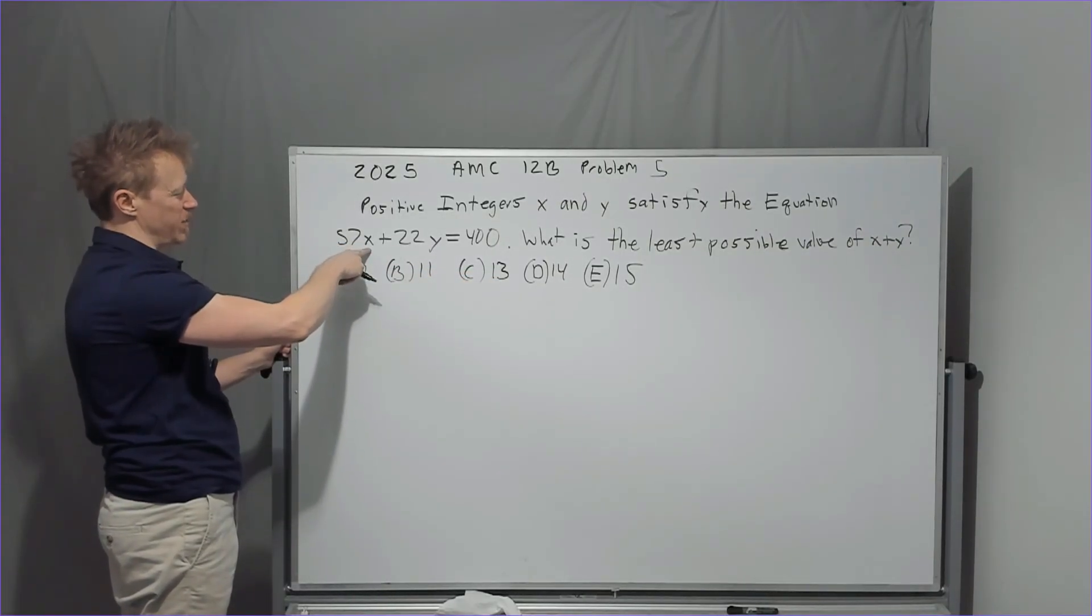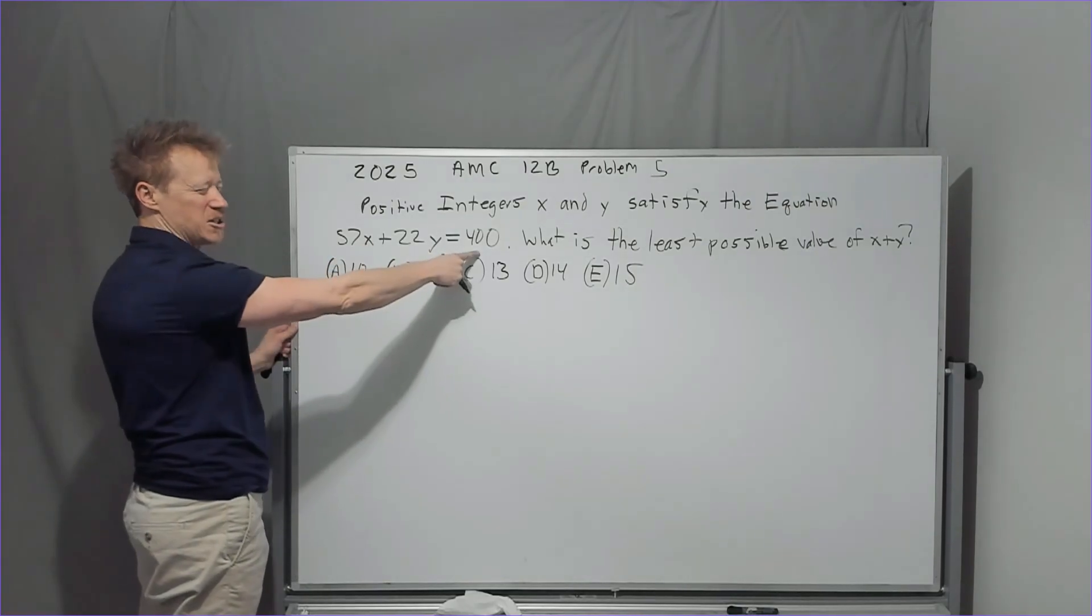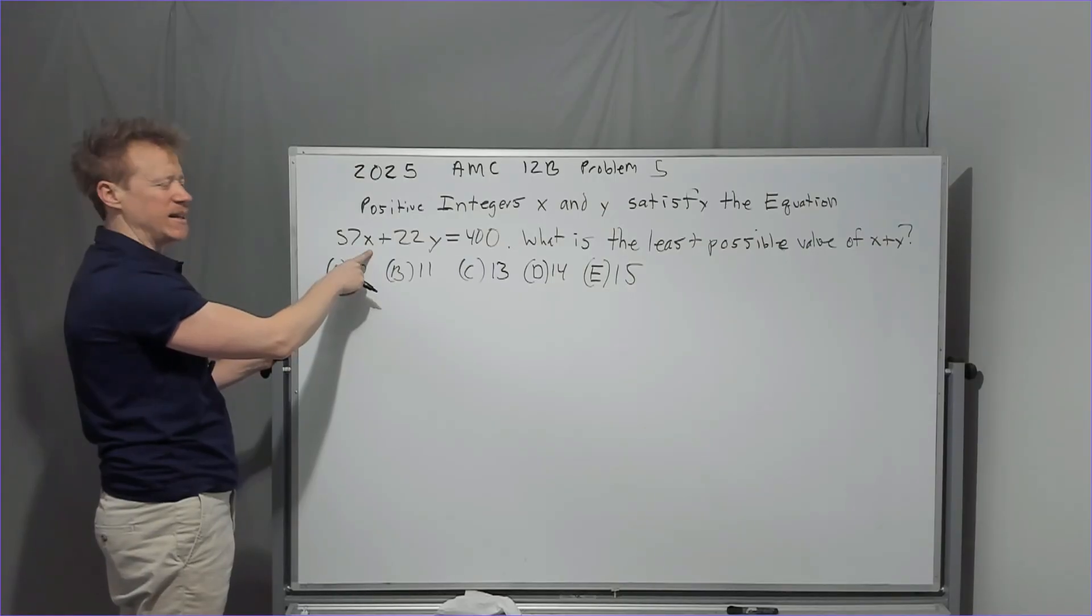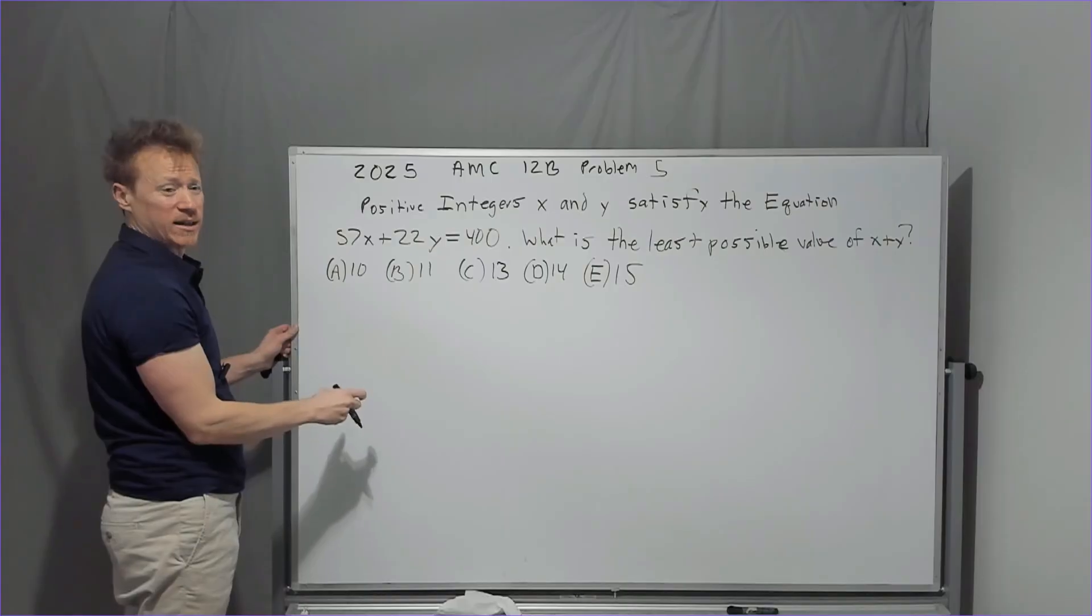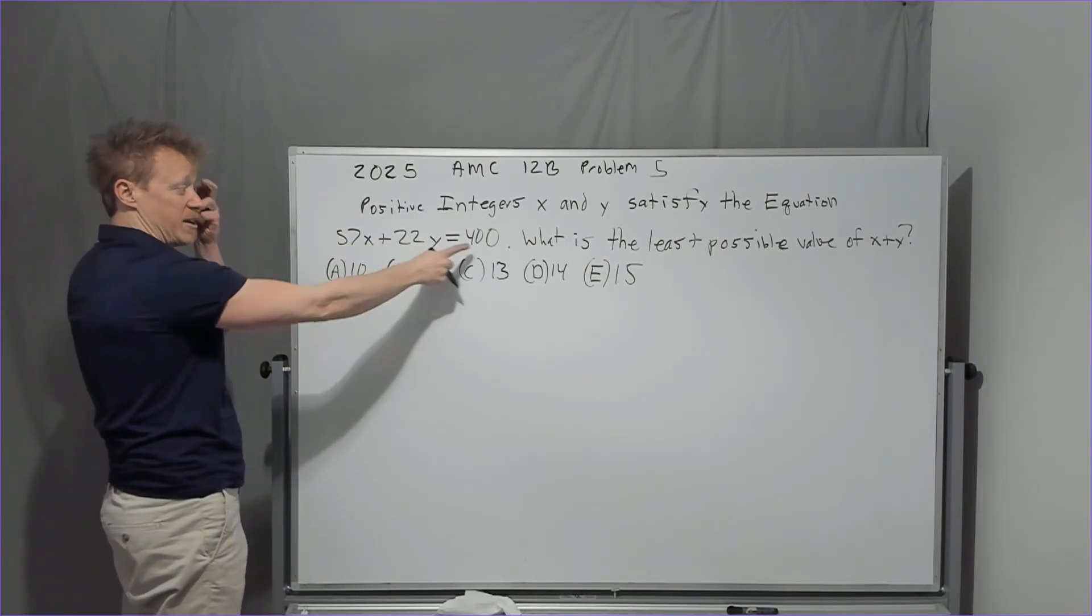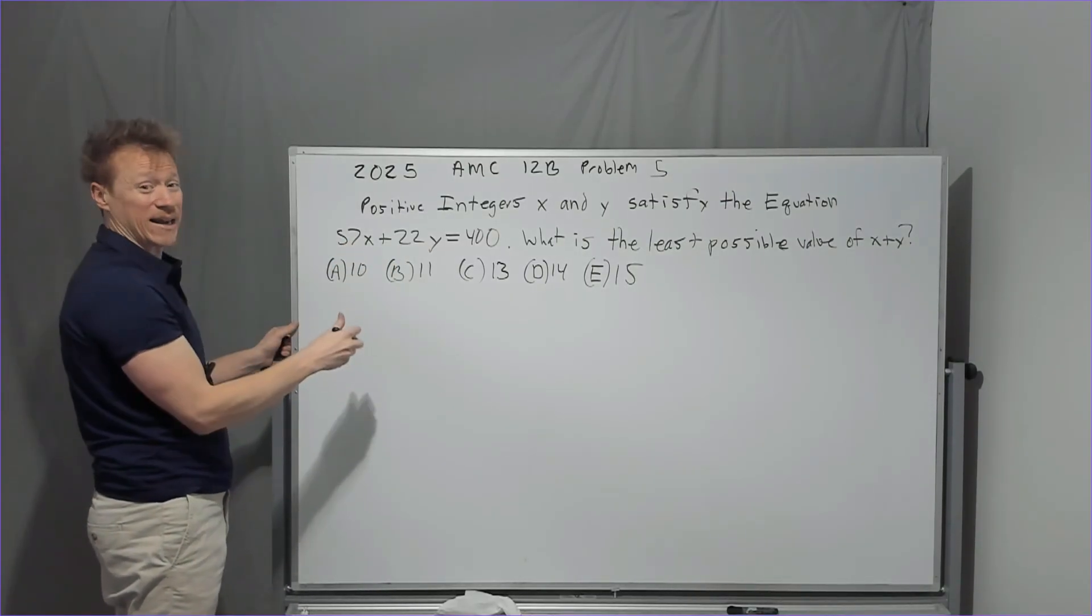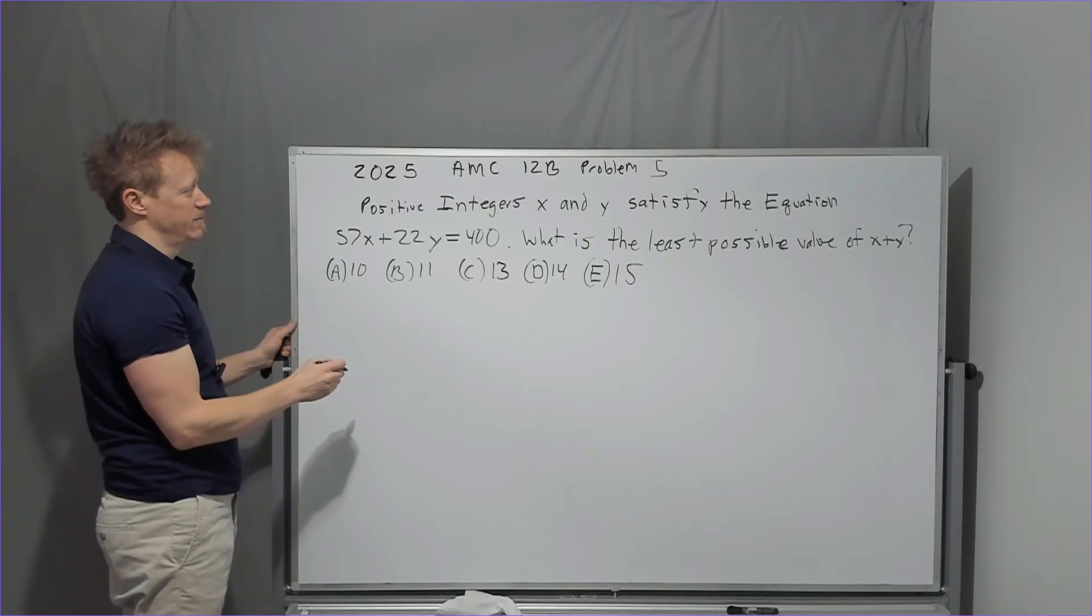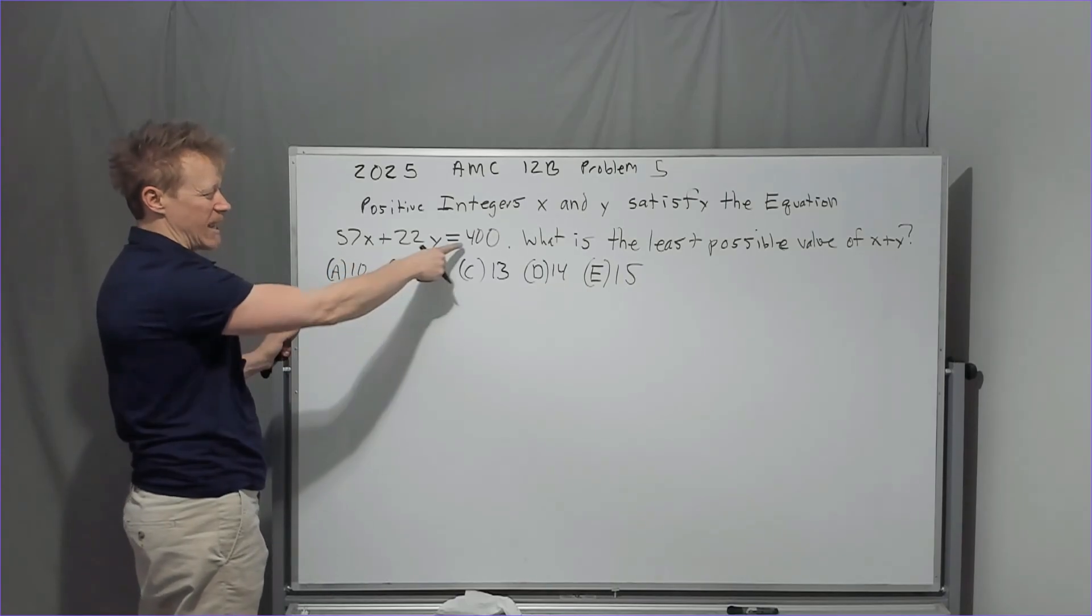If we want the least possible value of X plus Y, then we'd probably want this to take up most of the damage. So if we put it at 8, it's too big. If we put it, oh, why are we making it even and even at all? If X is not even, we couldn't get 400 because this is an even number. And if X is odd, this will be odd. You would never get an even result by adding an even and an odd. Therefore, X is 2, 4, 6, or 8. Who do we appreciate? I don't know. 2, 4, 6, or 8.